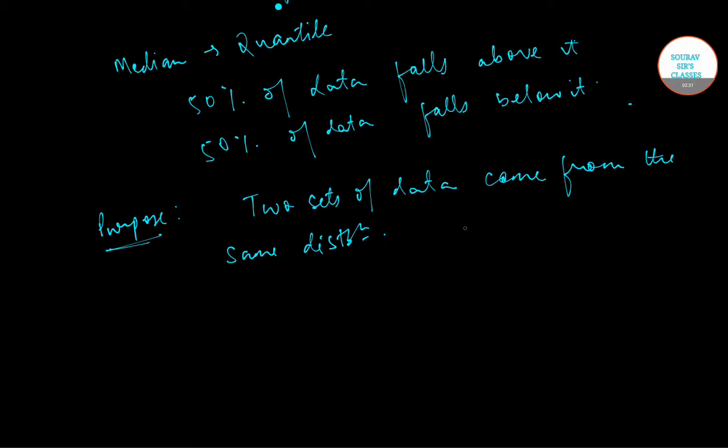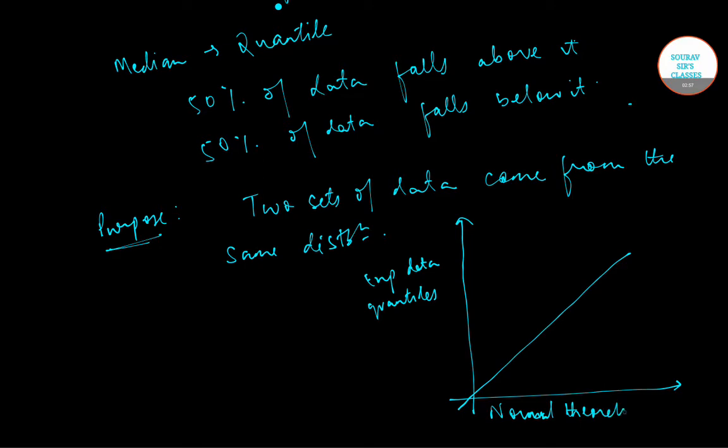A QQ plot is something like this. This is a 45 degree reference line. On the Y axis we have exponential data quantiles, and on the X axis we have normal theoretical quantiles.